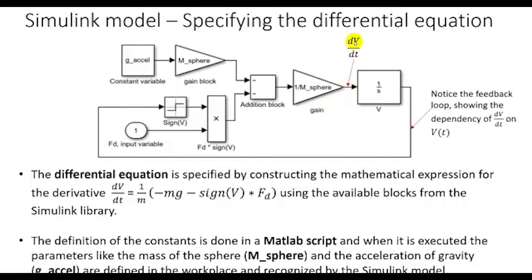Moving backwards from the rate of change of velocity, we see that it equals 1 over m times the addition of two signals in parentheses. The factor 1/m can be specified using a gain block, which receives an input and produces an output equal to the input multiplied by the gain — in this case, 1 over the mass of the sphere. The input to the gain block is the addition of two signals: the gravity force and the signal sign(velocity) times the aerodynamic resistance. Since this is the addition of two signals, the output can be represented by an addition block with two inputs being added or negated.